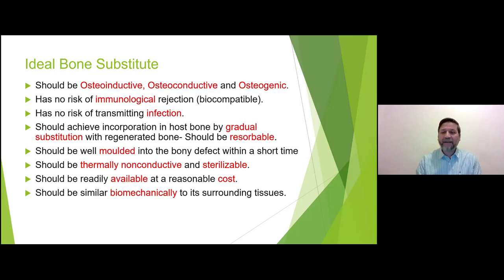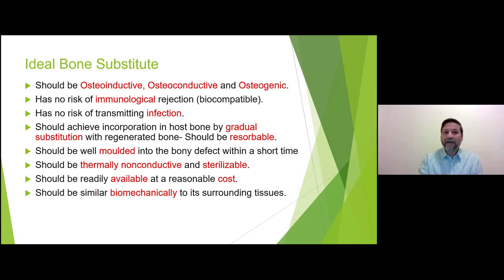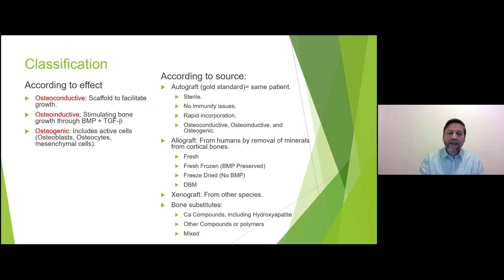The ideal substitute should be moldable into the defect regardless of its shape, should allow for sterilization and tolerate temperatures, should be readily available at a reasonable cost, and should be biomechanically similar to the surrounding tissues. There is no ideal bone substitute available — the best that can come close would be the patient's own bone borrowed from somewhere else.